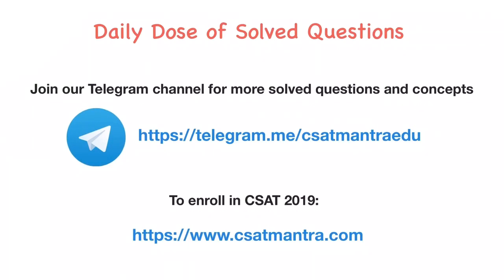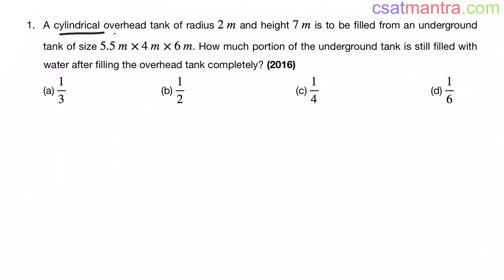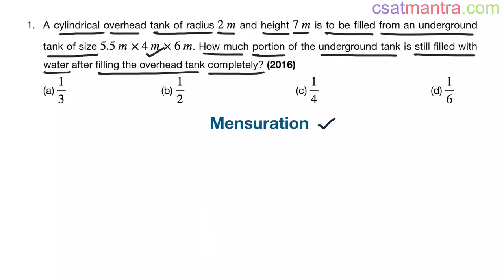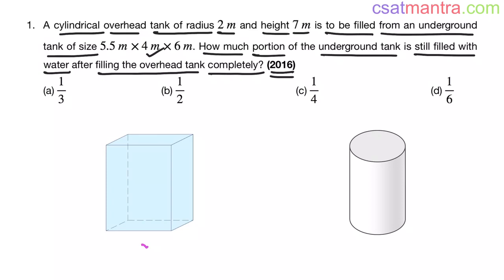A cylindrical overhead tank of radius 2 meters and height 7 meters is to be filled from an underground tank of size 5.5 × 4 × 6 meters. How much portion of the underground tank is still filled with water after filling the overhead tank completely? This question is from the mensuration chapter, asked in 2016. We have a tank of cuboid shape underground.